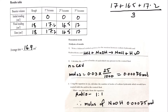Using the equation, calculate the moles of NaOH that reacted with the acid. Since HCl and NaOH are in a 1:1 ratio, the moles of NaOH are also 0.00075 mol.